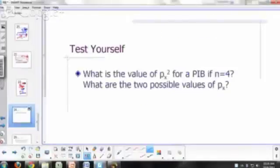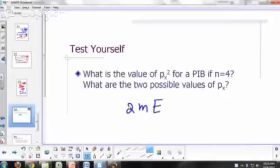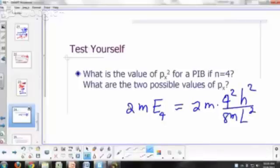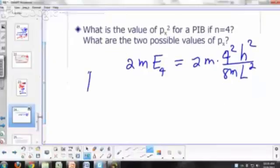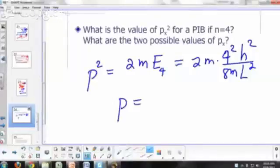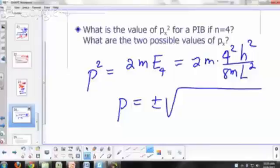So what is the value of px squared if n equals 4? It's just 2m E, right? For n equals 4. So 2 times the mass times, what's E for 4? 4 squared h squared over 8m l squared, right? So that's the allowed value for p sub x squared. So that's the allowed value for p, plus or minus the square root of that.